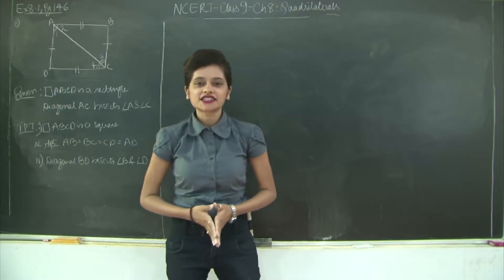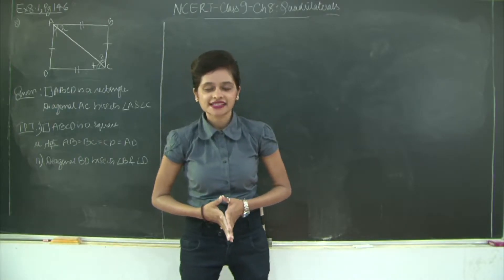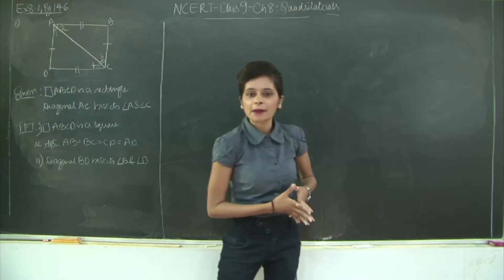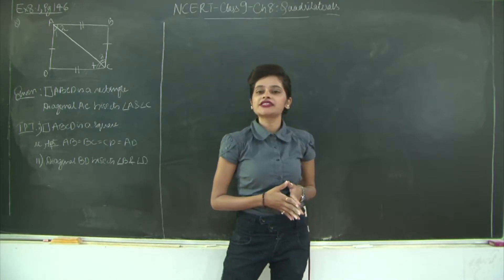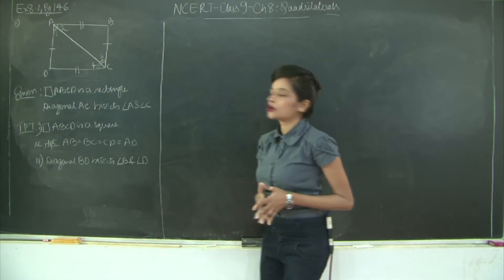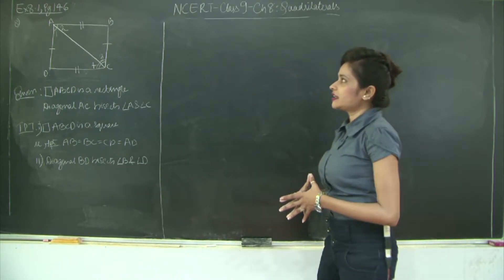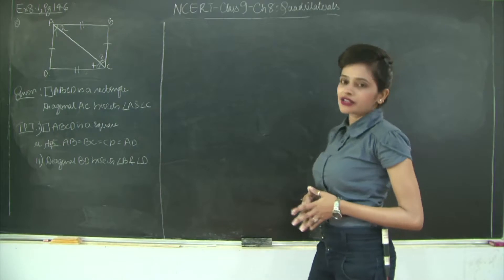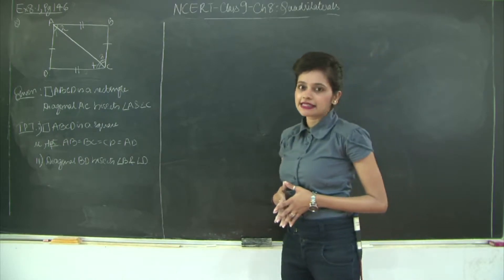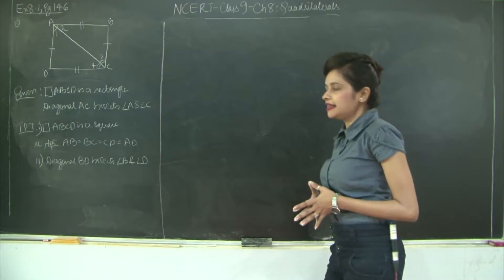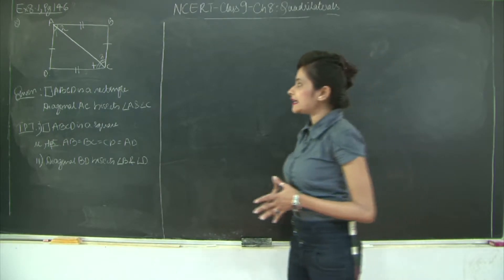Hello students, let us continue with Exercise 8.1 of Chapter 8, Quadrilaterals. We'll take a look at the 8th question wherein it's given that quadrilateral ABCD is a rectangle and diagonal AC bisects angle A and angle C.